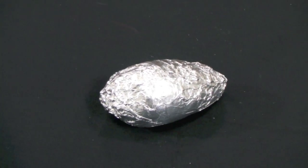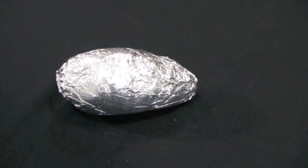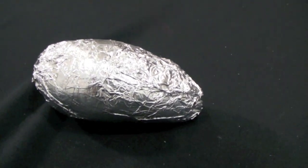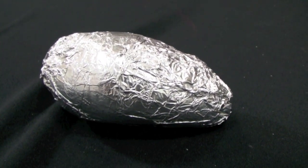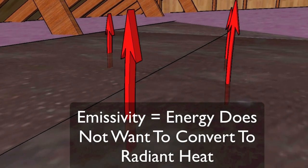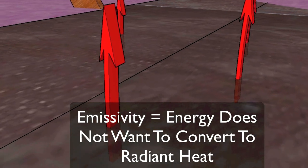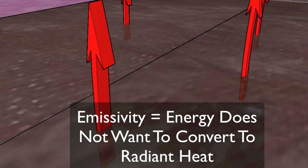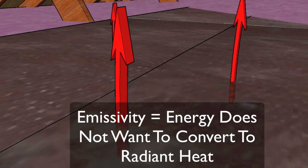When you wrap a potato with foil to keep it hot, it's working off its emissivity quality. So essentially, your attic insulation becomes like just a big baked potato with the foil on top. Heat or energy that's stored within the insulation doesn't want to transfer into the attic because of the emissivity quality of the radiant barrier.